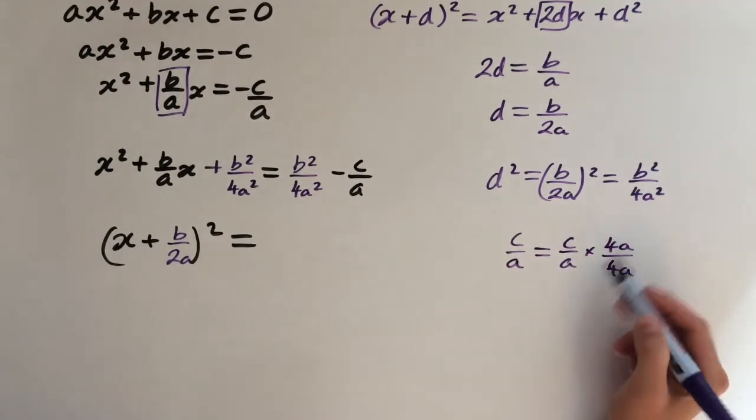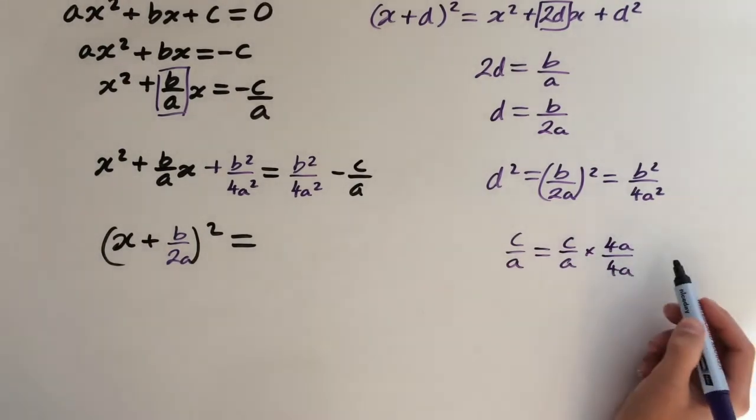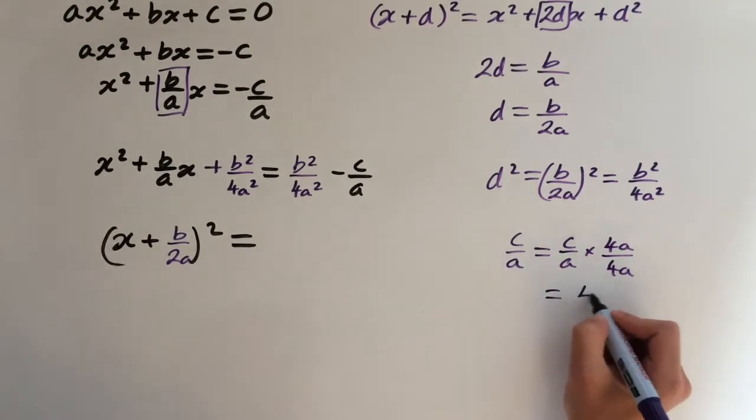We can do this because this is essentially multiplying by 1, since the 4a's cancel out. But we get 4ac over 4a².